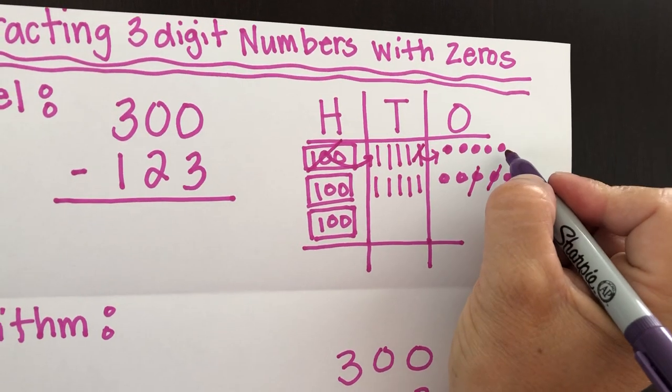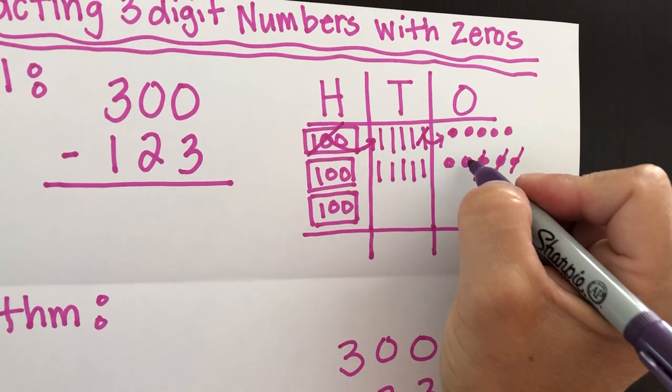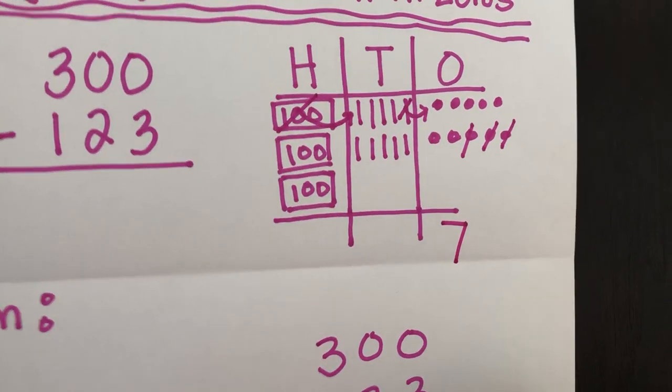How many ones do we have left over? 1, 2, 3, 4, 5, 6, 7. So we write our answer down below.